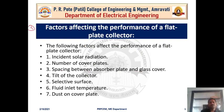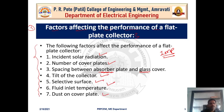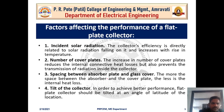The second topic is factors affecting the performance of a flat plate collector. There are seven factors: first, incident solar radiation; second, number of cover plates; third, spacing between the absorber plate and glass cover; fourth, tilt of collector; fifth, selective surface; sixth, fluid inlet temperature; and seventh, dust on cover plates.